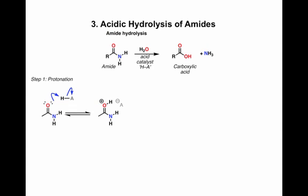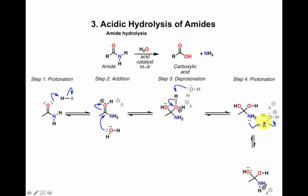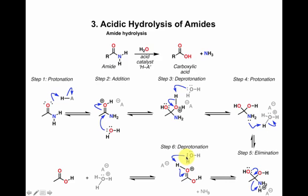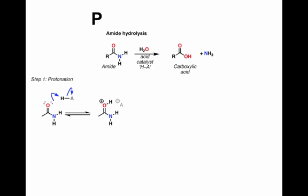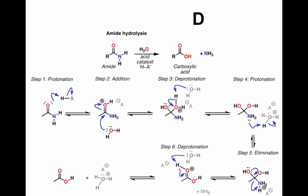Let's look at the third reaction: acidic hydrolysis of amides. Again, we start with protonation of the carbonyl oxygen, making the carbonyl carbon much more electrophilic. Our nucleophile, present in large excess, is water that attacks the carbonyl carbon in an addition reaction. We deprotonate our positively charged oxygen. Now we protonate our nitrogen by acid, forming NH3+ — this is a good leaving group, a weak base, much better than NH2 itself. In our elimination step, we form NH3 and our protonated carboxylic acid. Finally, deprotonation by our solvent, water, gives us our acid catalyst again and our carboxylic acid at the end. Same six steps — PADPED.